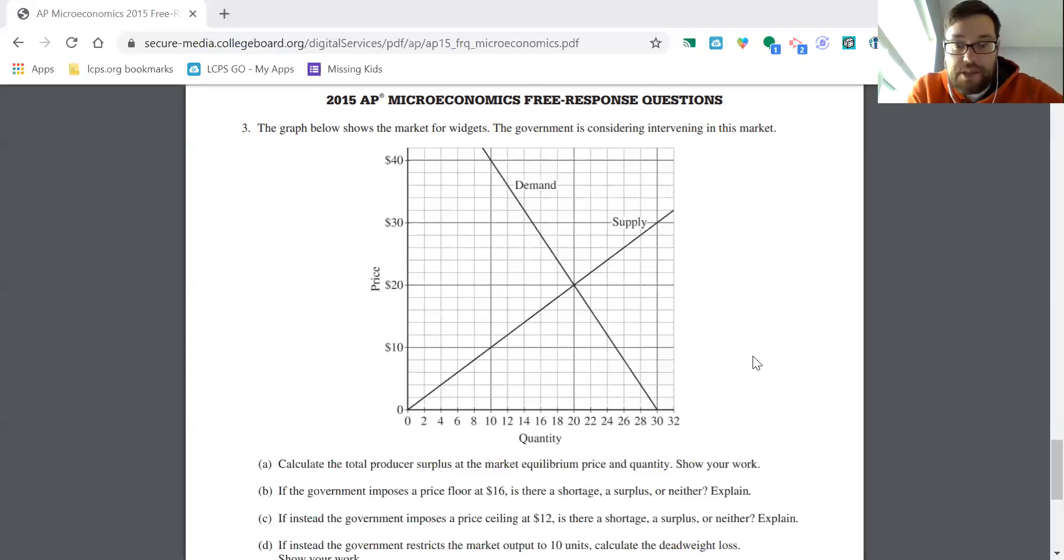If the government imposes a price floor at $16, is there a shortage or surplus or neither? They give you a graph here. I'm just going to sketch it out. So let's draw it on the graph, price floor at $16. So we've got 10, 12, 14, 16. I'm going to write that, price floor.